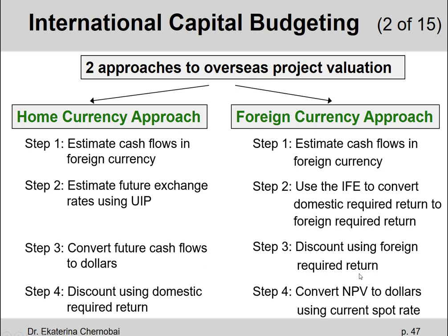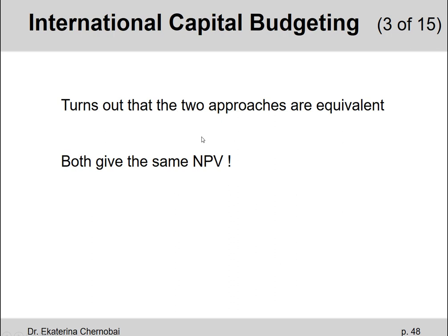Only in the last step do we convert the foreign currency NPV into dollars using today's spot exchange rate. So in the home currency approach, the first thing we do is convert all cash flows into dollars, while with the foreign currency approach we calculate the NPV in the foreign currency first and convert to dollars last. It turns out it doesn't matter which approach you use, because both will give you the same exact net present value.